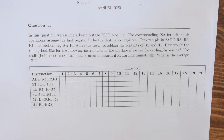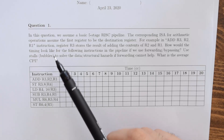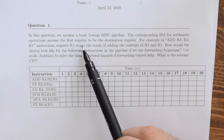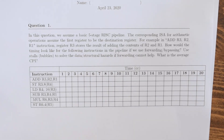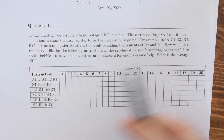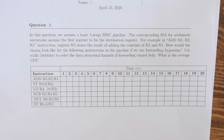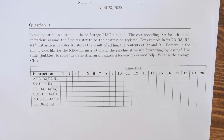We have a problem about pipelining. We assume a basic five-stage RISC pipeline. For arithmetic operations, the first register is the destination register and the other two are the operands. For example, ADD R3, R2, R1 means R3 stores the result of adding R2 and R1. The question asks how the timing would look for the following instructions in the pipeline using bypassing or forwarding. We also use stalls or bubbles to solve any data or structural hazards if necessary.